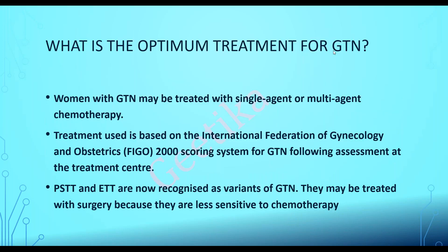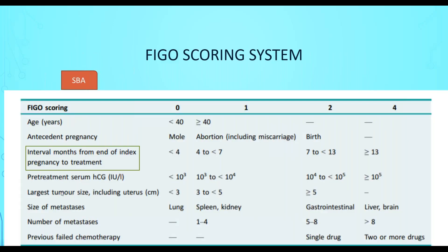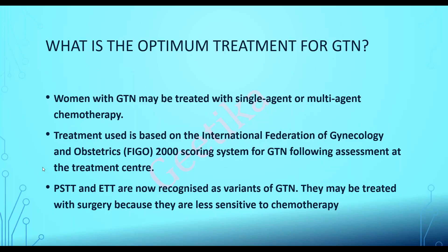What is the optimum treatment for GTN? GTN can be treated by single agent or multi-agent chemotherapy. Whether to give single agent or multi-agent depends upon the FIGO 2000 scoring system, which has eight prognostic parameters, each given a score of 0, 1, 2, or 4. If the score is six or less, it is low-risk GTD and the patient is treated with single agent chemotherapy — methotrexate. If the score is seven or more, the patient is treated with multi-agent chemotherapy.